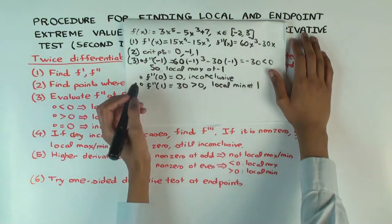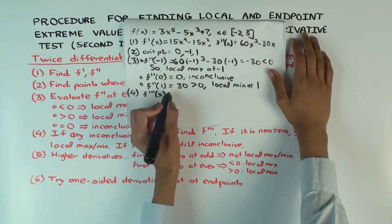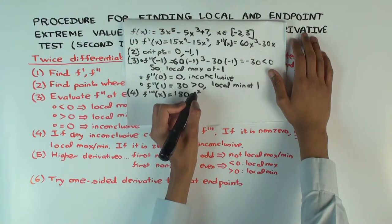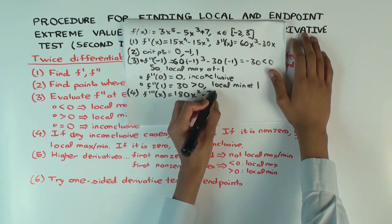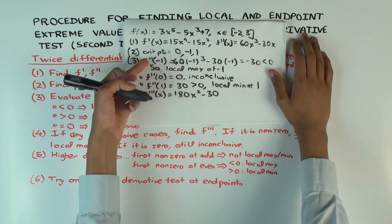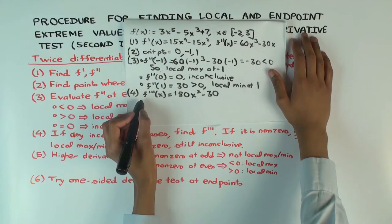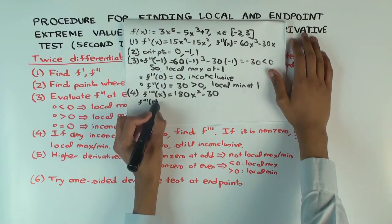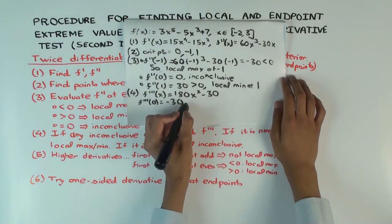Since x = 0 is still inconclusive, we take the third derivative: f'''(x) = 180x² minus 30. We don't need to re-evaluate at negative one or one since those cases are already settled. At x = 0, f'''(0) = -30, which is nonzero. This means it is neither a local maximum nor a local minimum at x = 0.